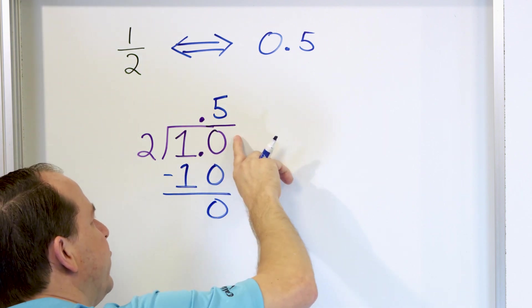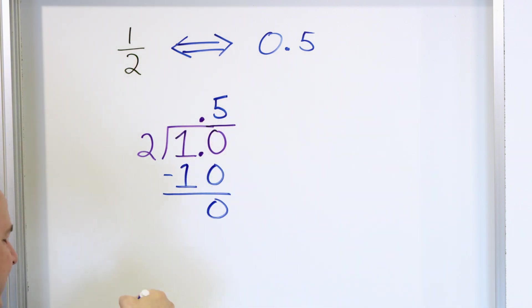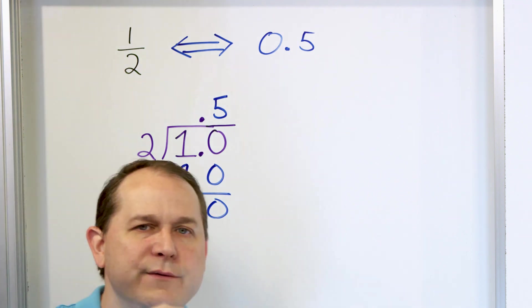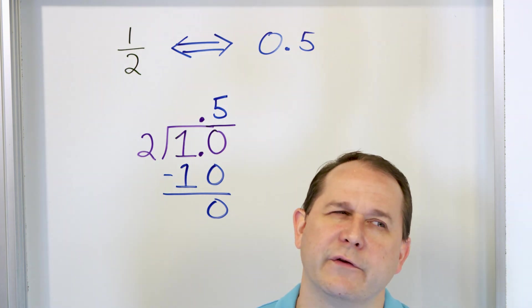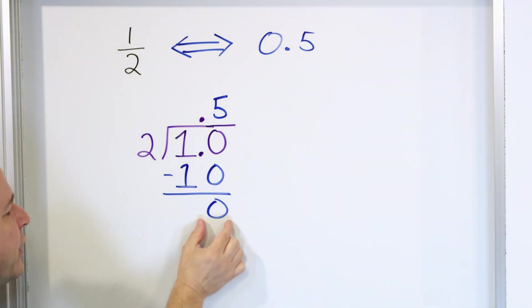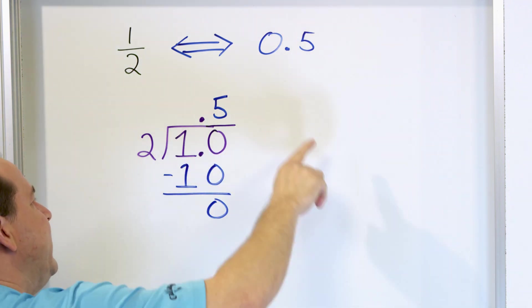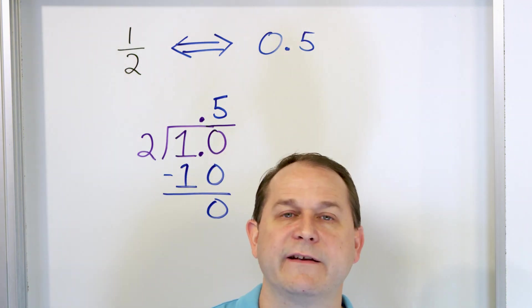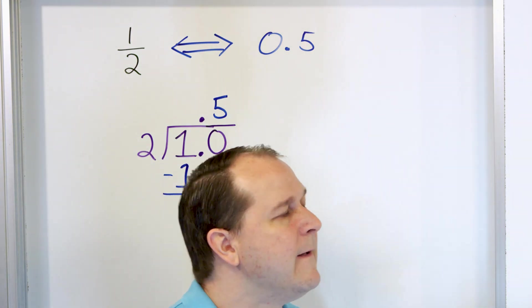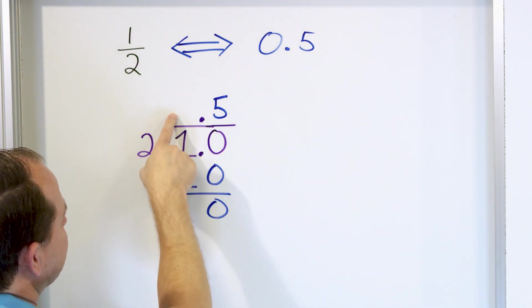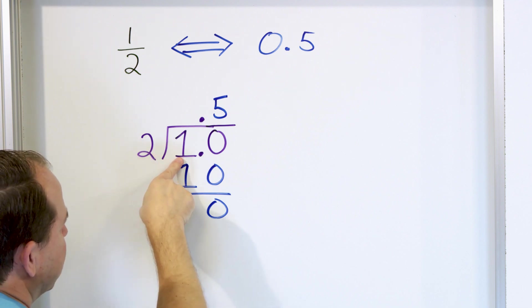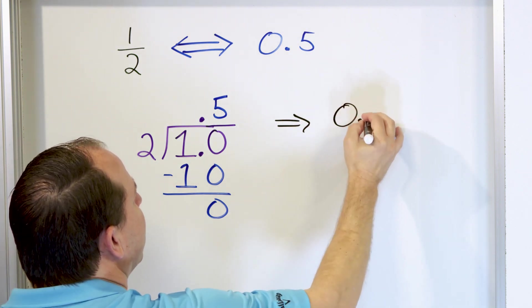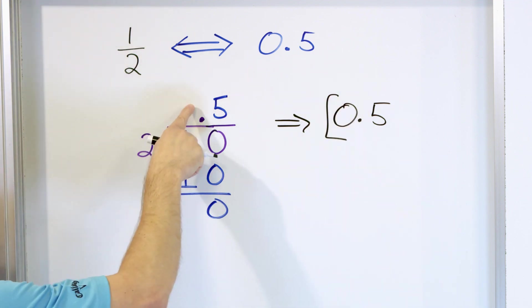There are no other digits here. We could continue adding zeros after the decimal, but we don't need to because we got a remainder of 0. You want to continue the decimal division process until you get a remainder of 0. There are only two ways this process ends: either you get a remainder of 0, or you keep going until you see a repeating pattern in the decimal. Here we got a remainder of 0, and the answer is 0.5 — there's an invisible 0 before the decimal, so the answer is 0.5.